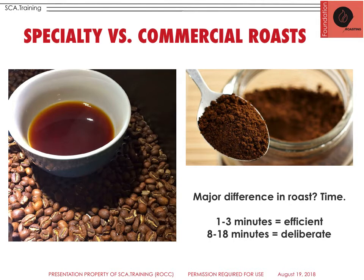We need to focus a little bit on commercial versus specialty roasting. What's the major difference? It's time. We're still using similar equipment with the same coffee beans, but commercial coffee roasting is all about speed and efficiency — what we can also call flash roasting: one to three minutes to roast and toast that coffee as quickly as possible while still achieving a roasted flavor. With specialty roasting, we want to optimize flavor characteristics, and that may take 8 to 18 minutes. It's a very deliberate process.